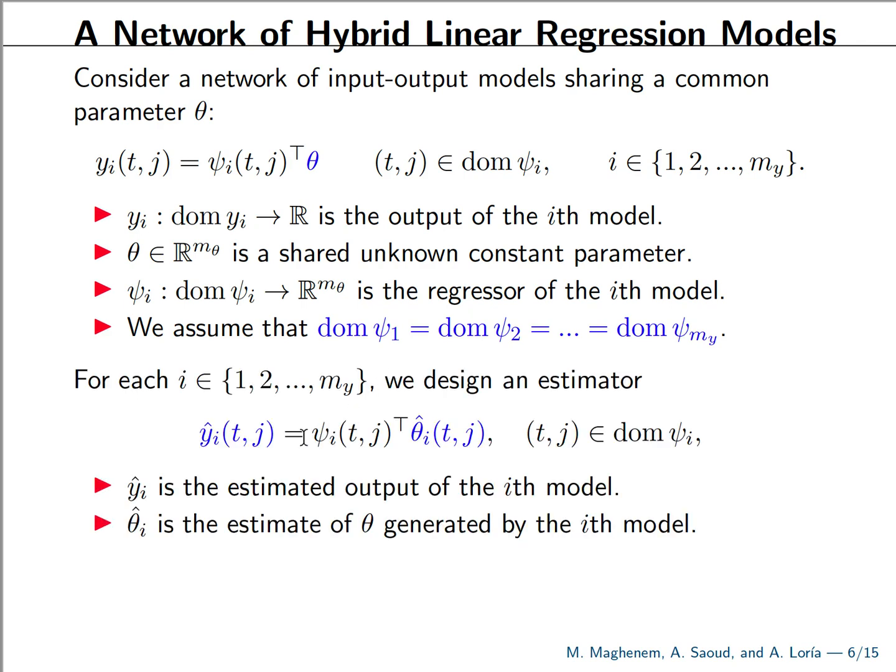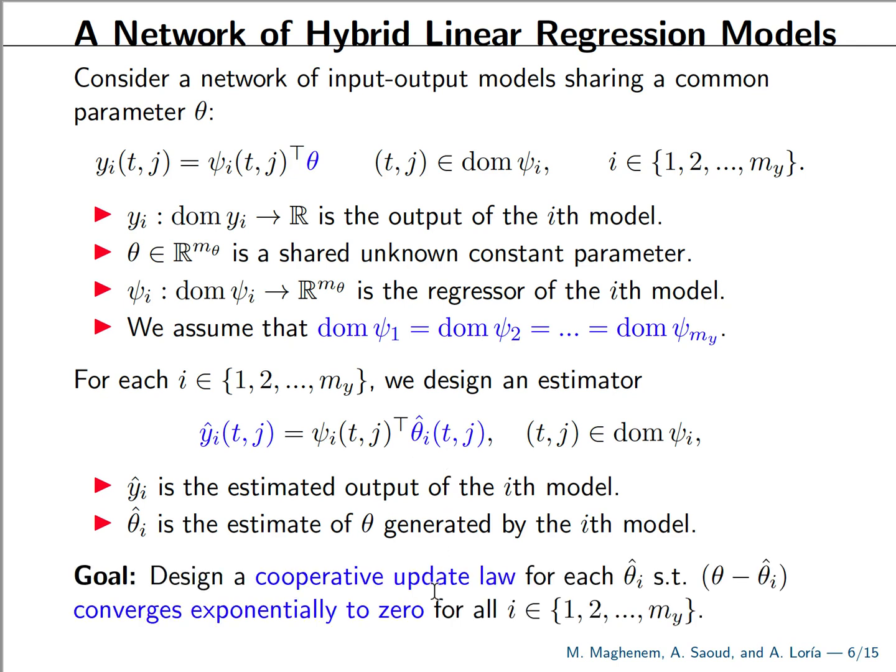And here we can define a local estimator. For each agent, we have this estimator model. There is just a copy. And now the challenge is how can we design an update law for this estimate of agent i cooperatively, meaning that we take into account what the other estimators are doing, in order to guarantee that all the estimators reconstruct the parameter theta exponentially fast.